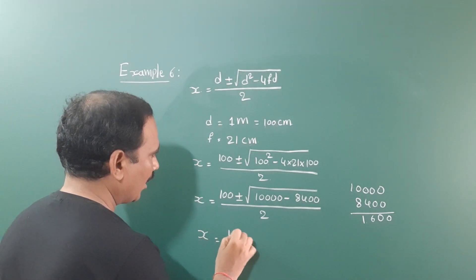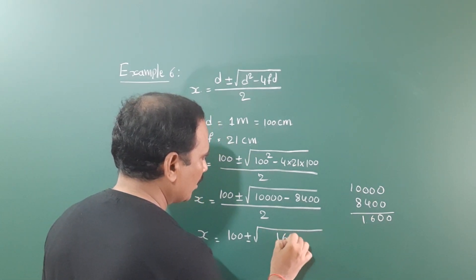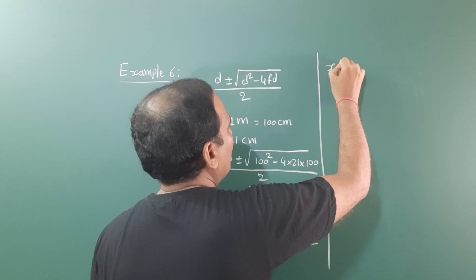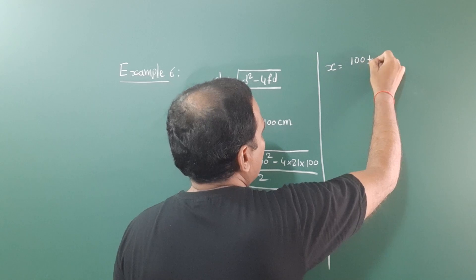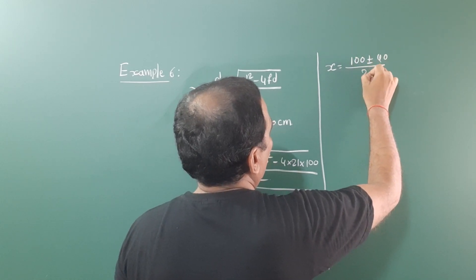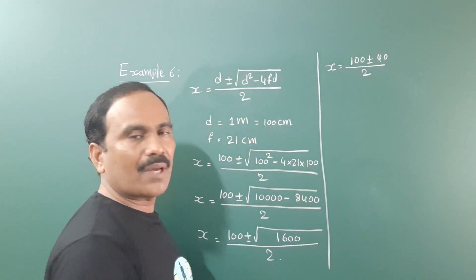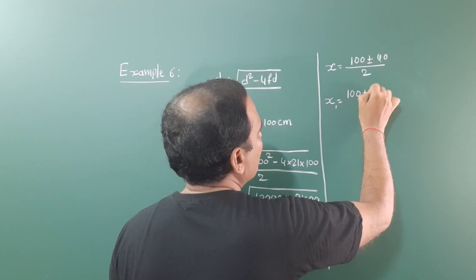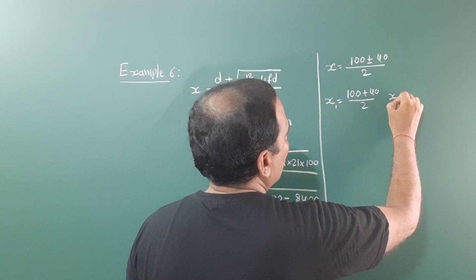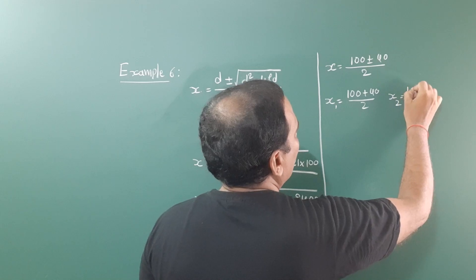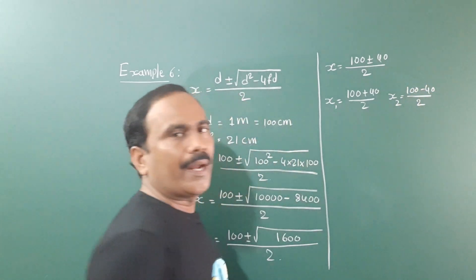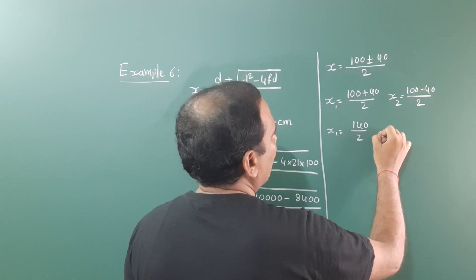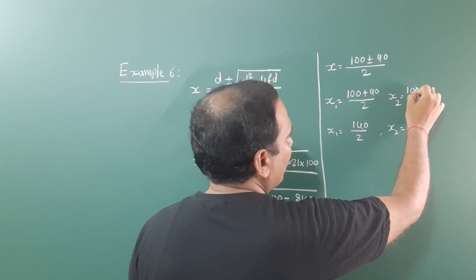So x = [100 ± 40] / 2. Taking the plus sign: x₁ = (100 + 40) / 2 = 140 / 2 = 70 centimeters. Taking the minus sign: x₂ = (100 − 40) / 2 = 60 / 2 = 30 centimeters.